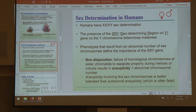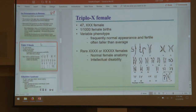We can get aneuploidy events — abnormal numbers of sex chromosomes due to non-disjunction. In meiosis I, a homologous pair might not separate; in meiosis II, sister chromatids might not separate. We can end up with multiple copies of X or Y. A triple X female — also possible with four or five Xs — is a non-disjunction event producing triploidy: three copies of the same chromosome. Triple X is pretty much benign. Four or five Xs can cause some intellectual disabilities.